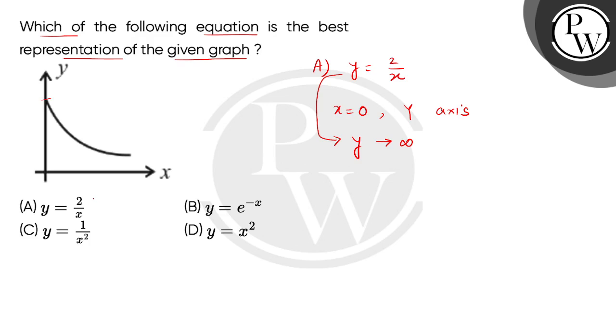So A is not the correct answer. Second, when we check E to the power minus X equals to Y, this indicates a negative exponential series. So we can say here, as we put X equals to 0, what can we get for Y's value? When we put 0...